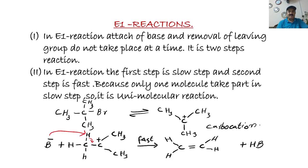Now we come to E1 reactions. In an E1 reaction, the attack of the nucleophile and the removal of the leaving group do not take place at the same time. So it is a two-step reaction. The first step is the slow step and the second step is a very fast step.